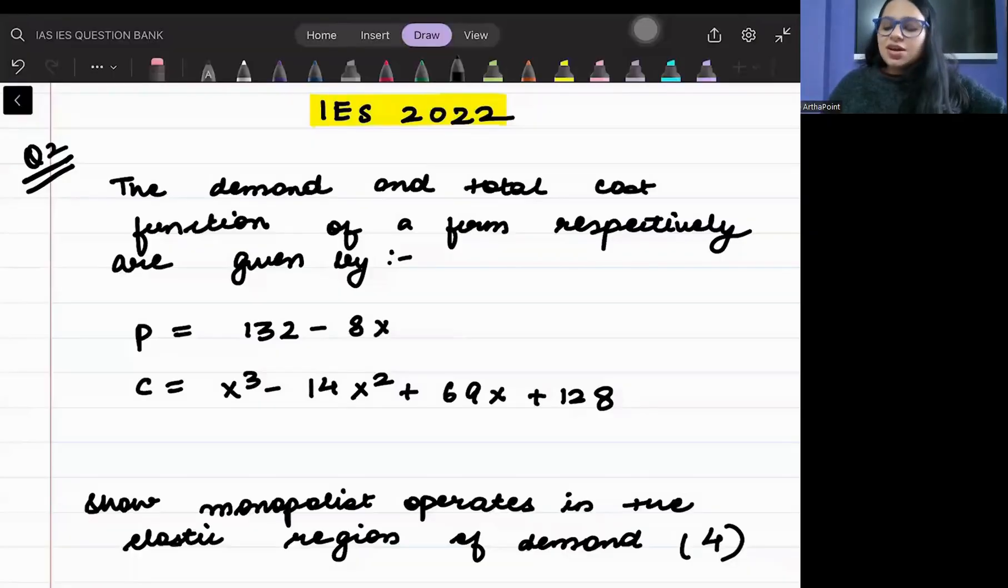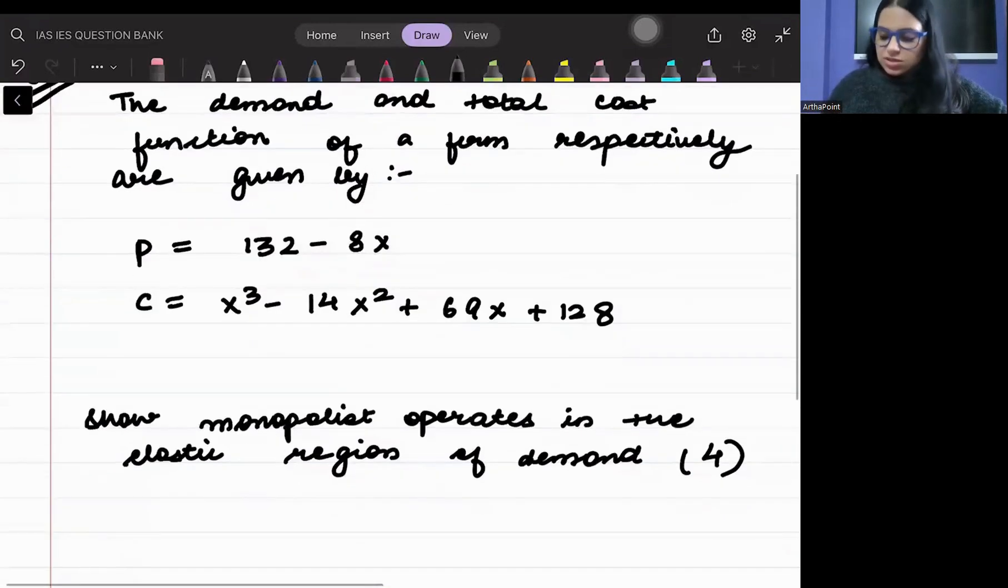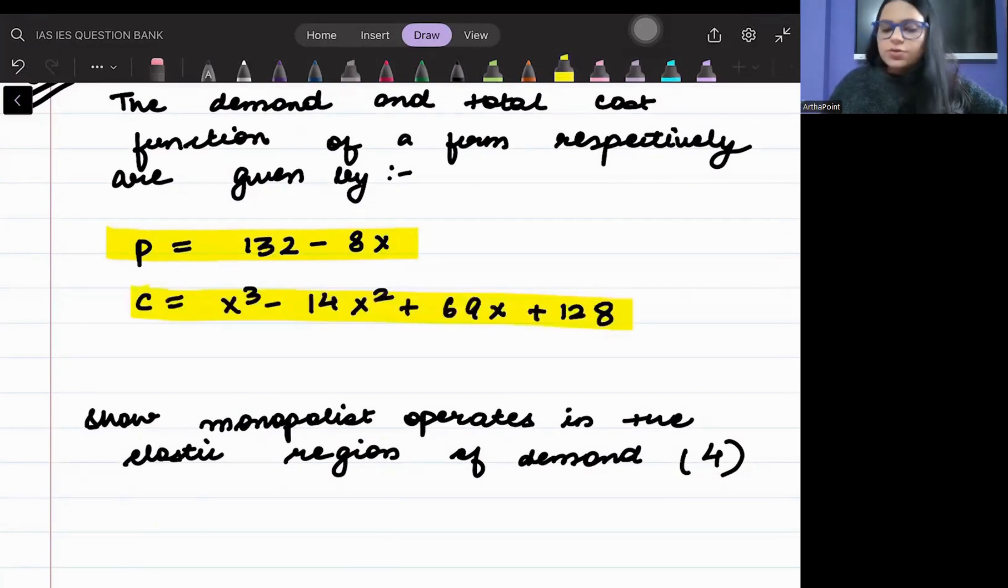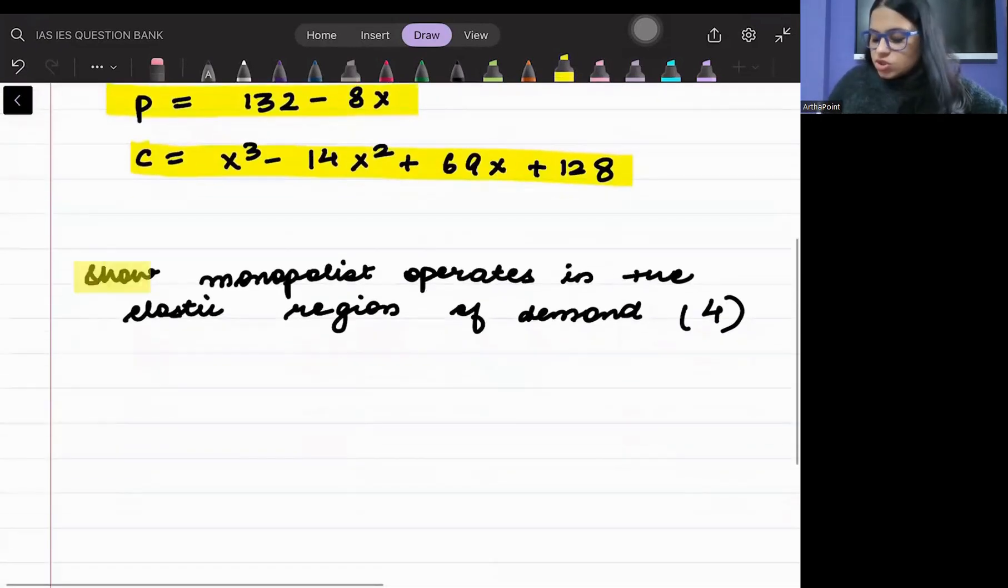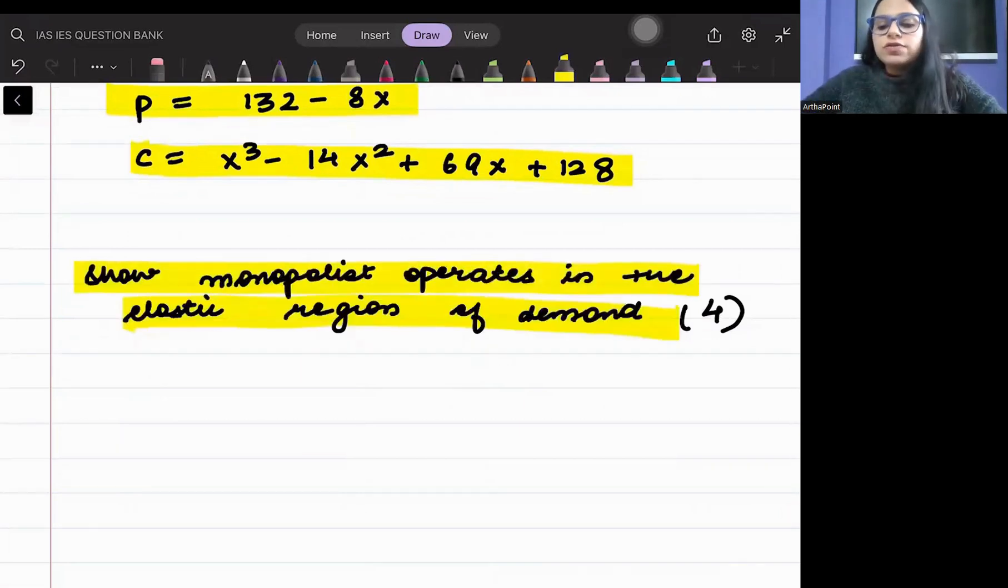Hello, in today's class I'm going to take a question from Indian Economic Service 2022 paper. We are given two things: one, we are given the demand curve, and second, we are given the cost function. It's a four mark question. It says show that monopolist operates in the elastic region of demand. So we have to show that it will operate in the elastic region of the demand.